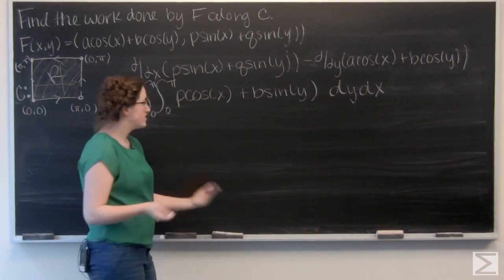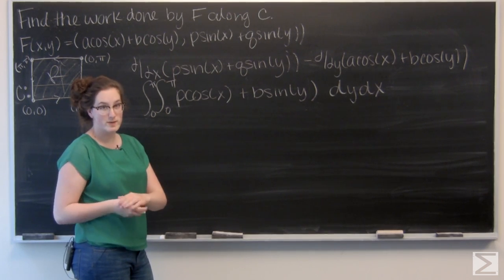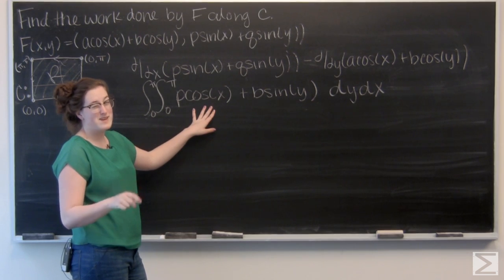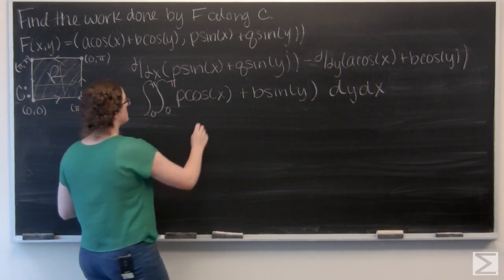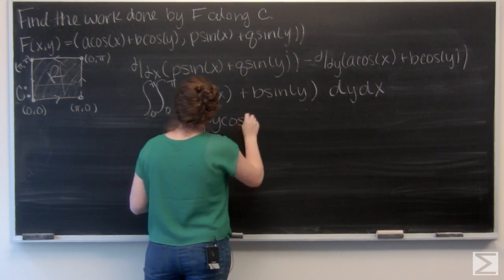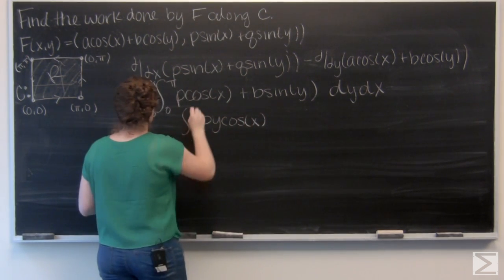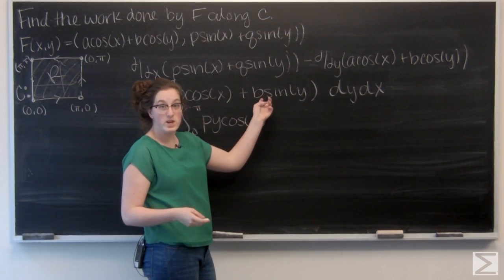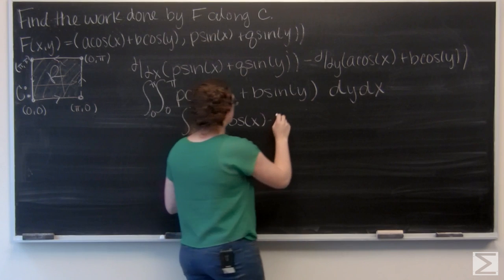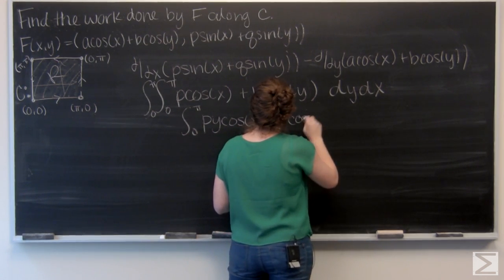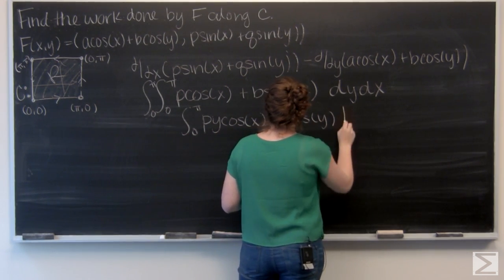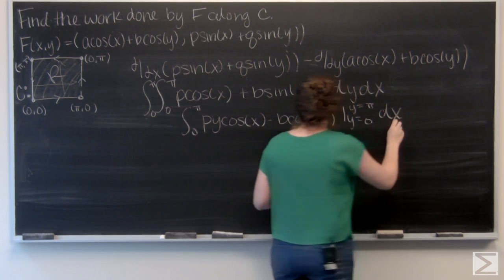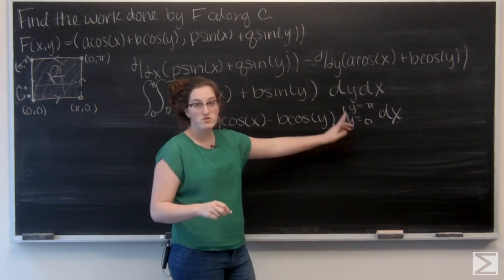Let's integrate with respect to y. So P cos(x) is going to be treated like a constant, so when I integrate I get P y cos(x). And then for B sin(y), when I integrate I get negative B cos(y).